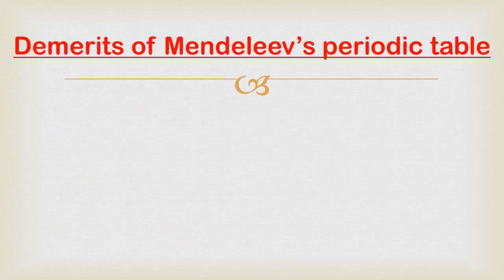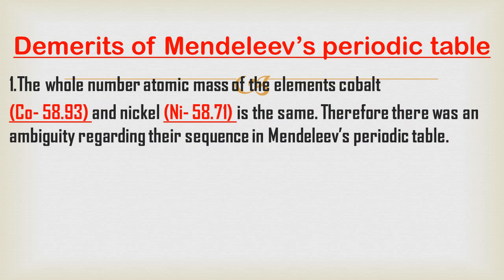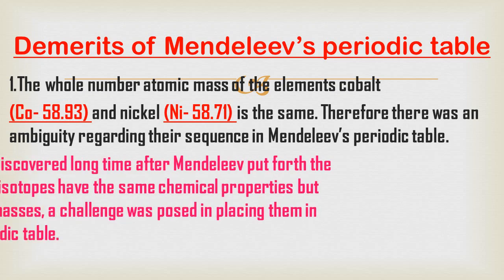Now let us understand the demerits of Mandeliev's periodic table. The first demerit is that the atomic mass of cobalt is 58.93 and that of nickel is 58.71, which are nearly the same. Mandeliev's periodic law states that elements are arranged according to their atomic masses, so there was a big ambiguity and confusion regarding the sequence of cobalt and nickel in the periodic table.